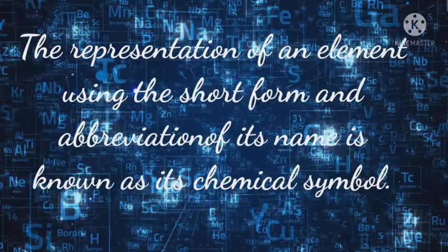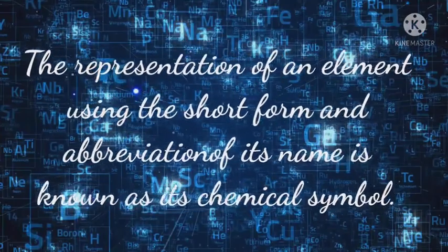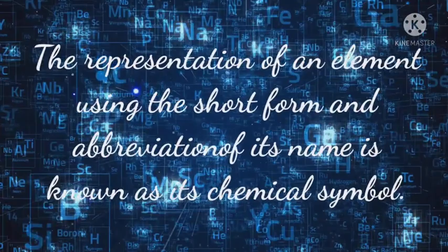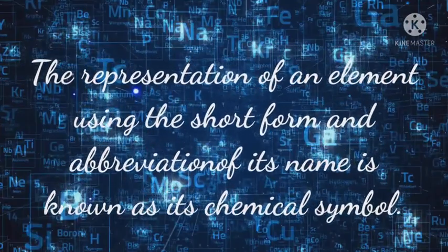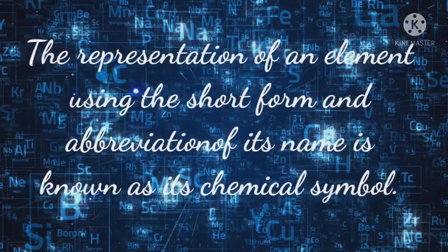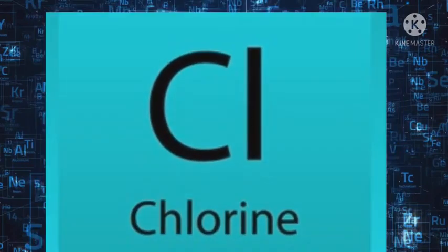Or we can say the representation of an element using the short form and abbreviation of its name is known as its chemical symbol. For example, oxygen is represented as O and chlorine is represented as Cl.